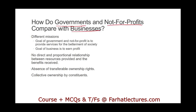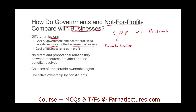The first difference we're going to look at between government and not-for-profit — which is GNP — versus a business, is the mission. The mission of government and not-for-profit is to provide services for the betterment of the society. For not-for-profit, that might mean helping the poor; for government, it means providing public safety and services that protect the public in general.